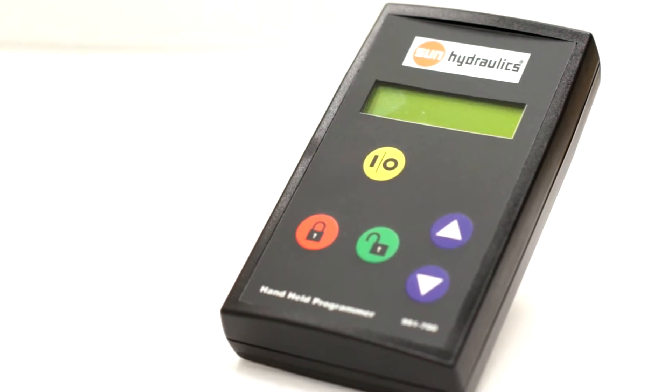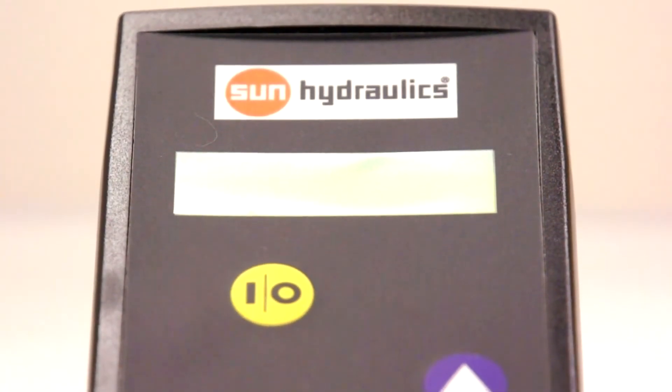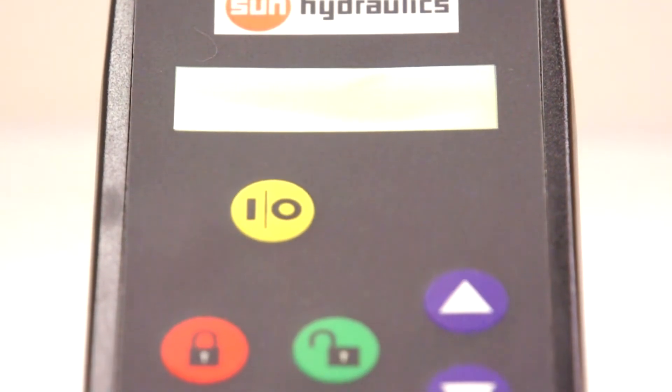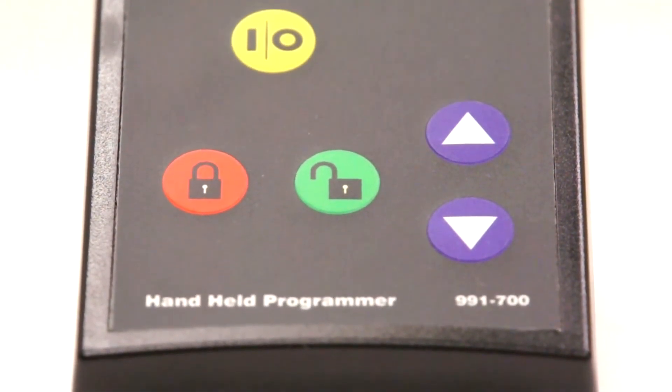This is Sun's Handheld Programmer. This is a portable and easy to use device to program the amplifier via an infrared adapter. The programmer has a memory function to save and transfer amplifier settings.